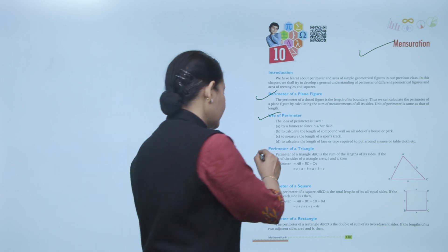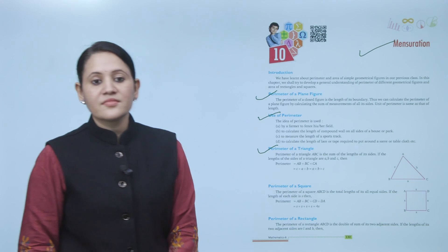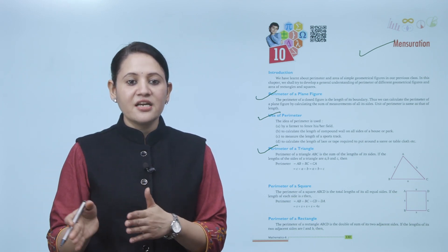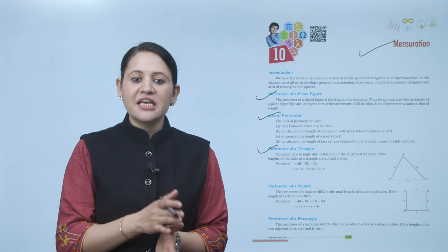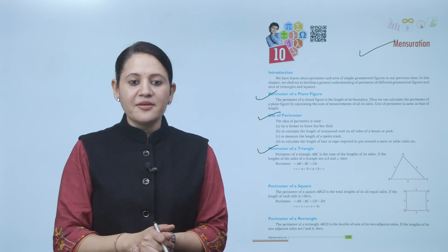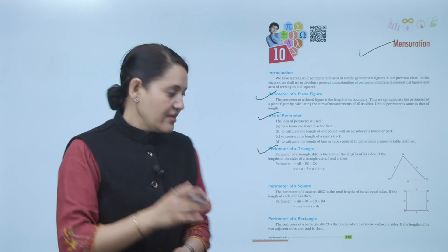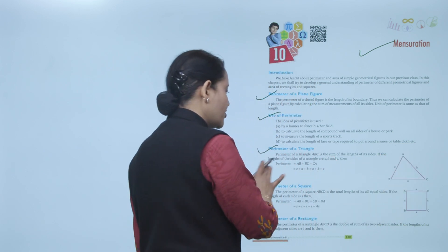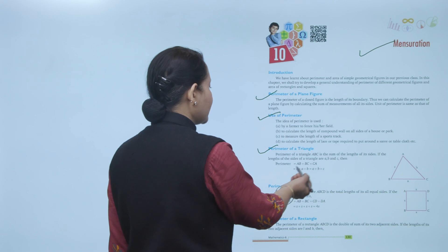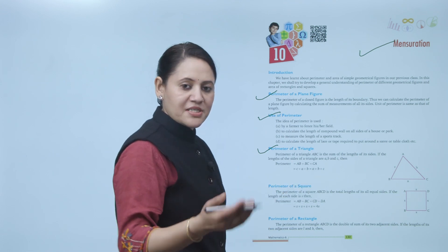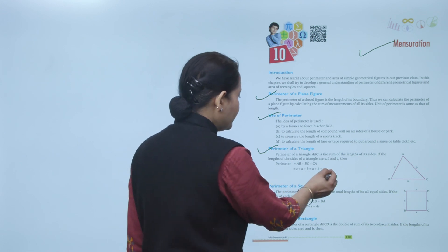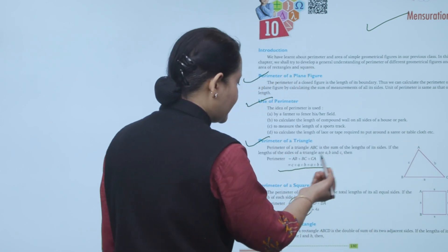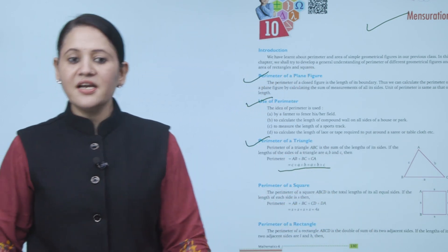Next is perimeter of a triangle. The perimeter of triangle ABC is the sum of the lengths of its sides. If the lengths of the sides of the triangle are a, b, and c, then the perimeter equals AB plus BC plus AC, which is a plus b plus c. So perimeter means sum of all three sides: a plus b plus c.